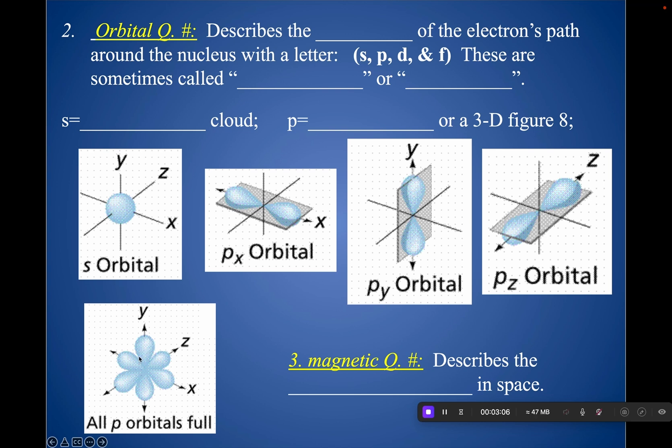So altogether, those three P orbitals would look something like this crazy kind of balloon-looking thing where here was one of the orbitals in x, one of the orbitals in y, and one of them in z together. So you should know those different shapes.